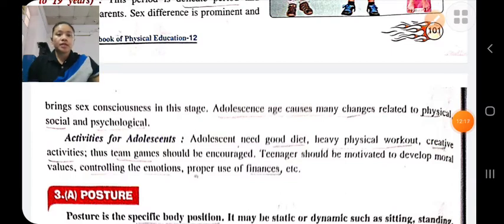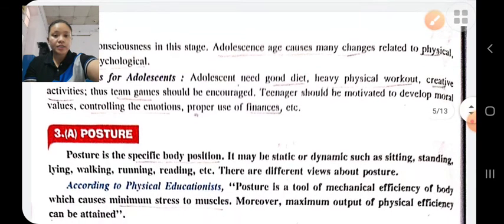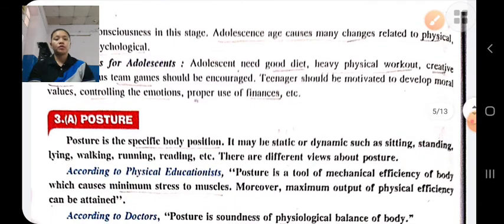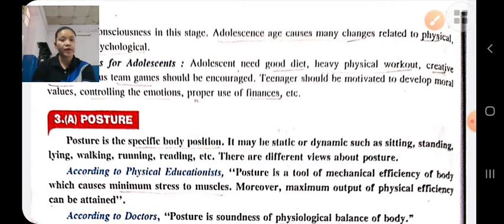This is about motor development in children and the exercise guidelines at different stages of growth and development. Next is posture. Posture means specific body positions — balancing the body in an accurate and proper manner so as to produce least fatigue.